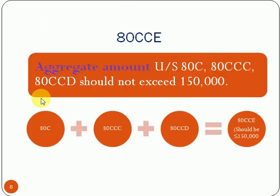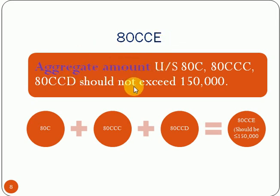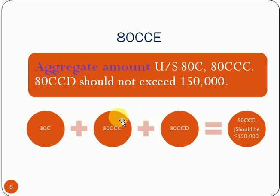Next is Section 80CCE. This section describes the aggregate amount which can be claimed under Sections 80C, 80CCC, and 80CCD. That aggregate amount should not exceed Rs. 1,50,000. So separately, these sections each have a limit of Rs. 1,50,000, but the aggregate amount of all three sections is also limited to Rs. 1,50,000 only.